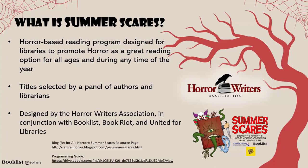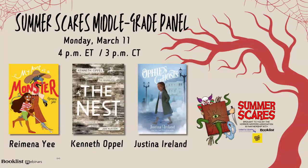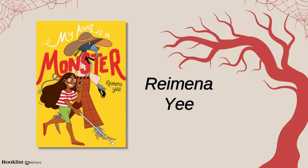This program is designed by the Horror Writers Association in partnership with United for Libraries, Book Riot, and Booklist. We sent a link to the 2024 Summer Scares Programming Guide — please feel free to ask for that in the Q&A box if you aren't able to locate it. Now let's get to the reason we're here today: our wonderful panel. Today we have the pleasure of hearing from Romaina Yee, author of My Aunt is a Monster; Kenneth Oppel, author of The Nest; and Justina Ireland, author of Ophi's Ghosts. First up is Romaina Yee — please tell us a little bit about your book.